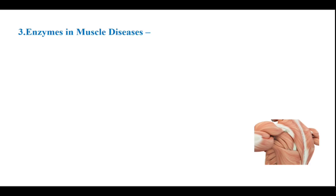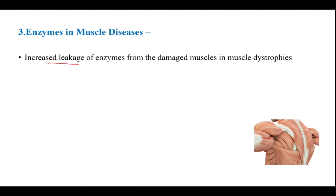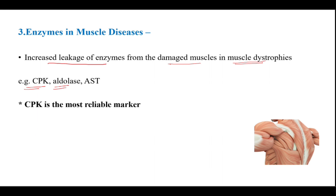Next, enzymes in muscle disease: there is increased leakage of enzymes from damaged muscle in muscle dystrophies. In such conditions, we see increases in muscle enzymes — examples include creatine phosphokinase, aldolase, and AST. CPK is the most reliable marker.